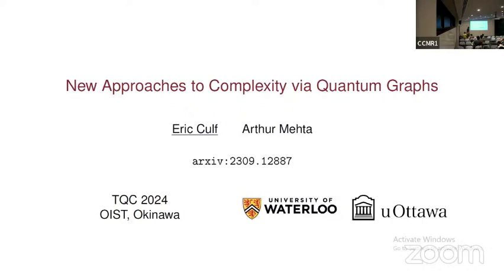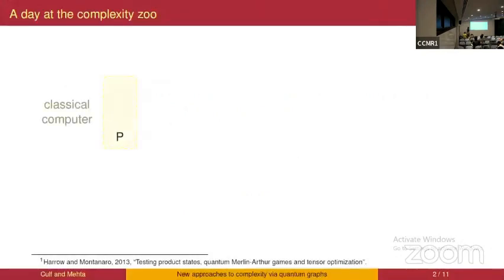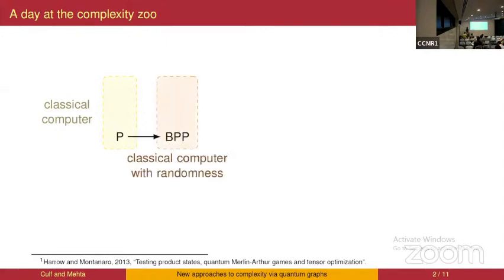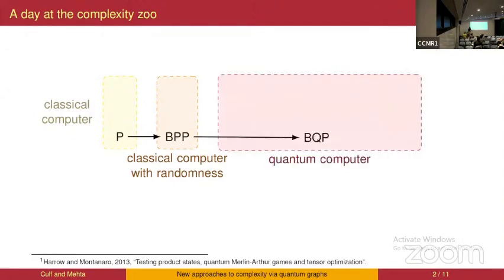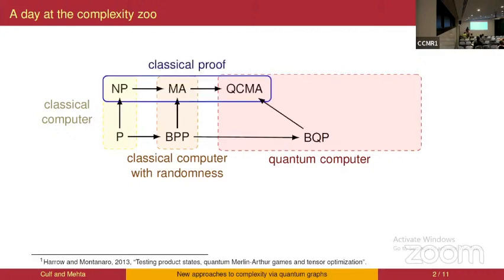I'll give an overview of the complexity classes involved in this work. The most basic one is when you have a classical computer — presented as a Turing machine — asking what can you do in polynomial time: that's the class P. There's also the random version, BPP (bounded error probabilistic polynomial time), and the quantum version BQP, which is what you can do with a quantum computer running in polynomial time.